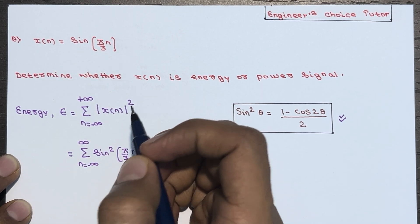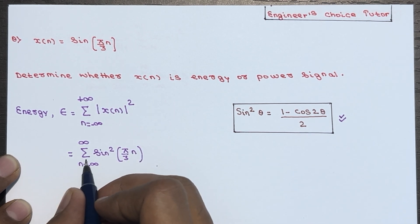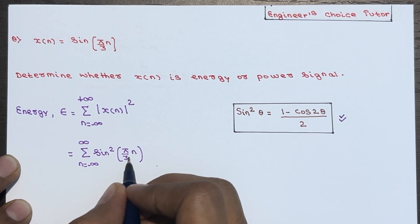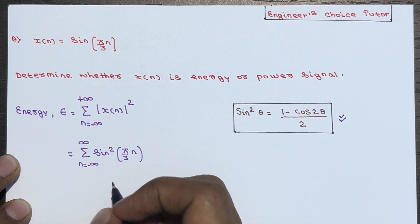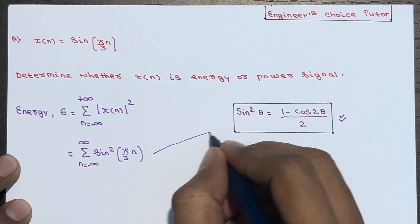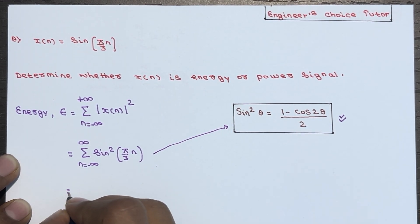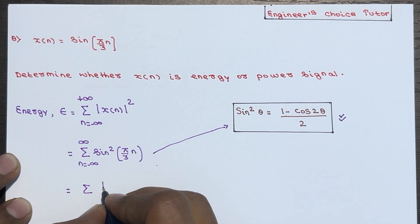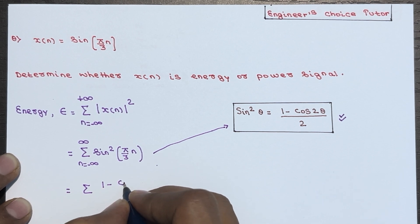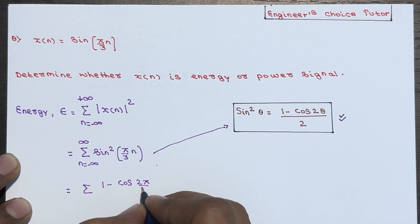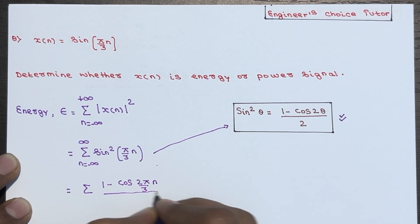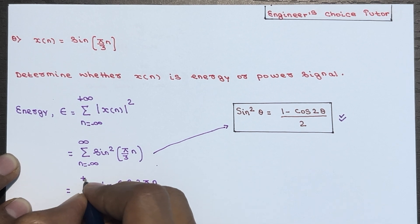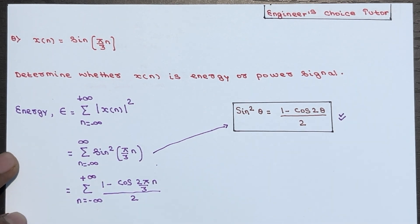After substitution it becomes: summation from n = −∞ to +∞ of sin²(π/3 · n). Applying the trig formula, this becomes the summation of [1 − cos(2π/3 · n)] / 2, over the range n = −∞ to +∞.